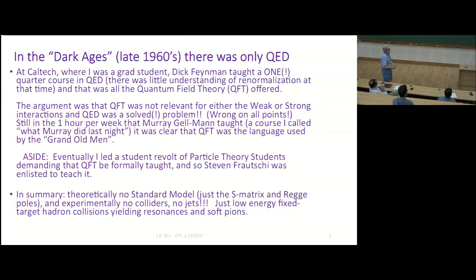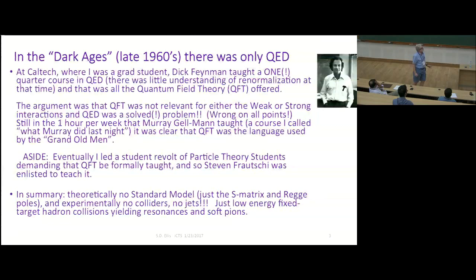It was a solved theory from his standpoint, so it went very quickly. There was an argument for why you didn't need to teach field theory, because it clearly wasn't relevant. There was QED, which was clearly field theory. Weak interactions had the Gamow-Teller four fermion, which you clearly couldn't iterate. The strong interactions were strong, and didn't know what to do, and they were a mess.